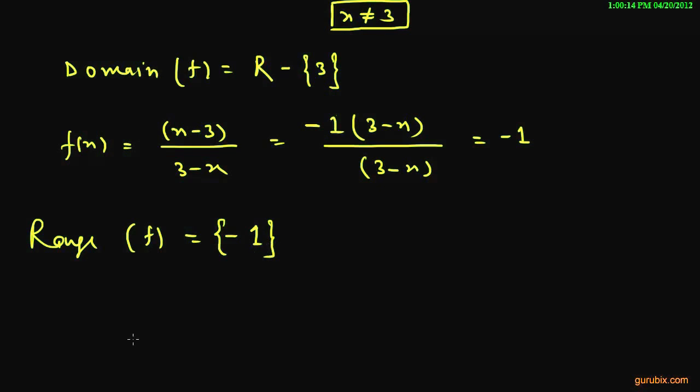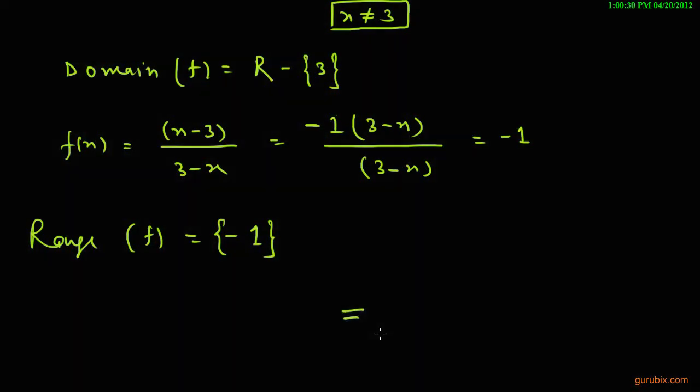The range is the set of all values of a function. Since f(x) always equals negative 1 for all x in its domain, the range is simply the set containing negative 1. So this is the solution of the question. Thank you.